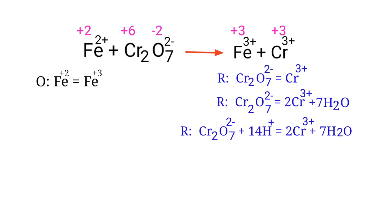For a balanced reaction, the sum of charges must be equal on both sides. Checking the oxidation half-reaction, both sides are not equal. To make them equal, we add electrons — not protons. Adding one electron to the right side makes both sides equal to +2. Now the charges are balanced in the oxidation half-reaction.